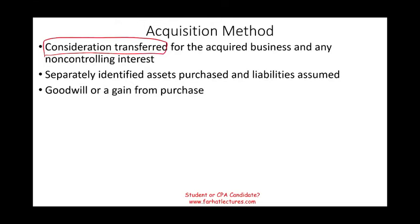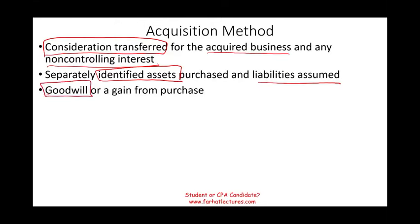First, you have to know how much you paid for the acquired business, including any non-controlling interest — we'll discuss that later. Then, what did you pay for? You have to identify the assets and any liabilities assumed. Because when you buy a business, you are buying a bunch of assets. Let's assume you are buying a pizzeria. You're buying the land, the building, the equipment, supplies, tables, and chairs. Any amount you paid above and beyond those identifiable assets is going to be called goodwill. And if you pay less than the identifiable net assets, you have a gain.